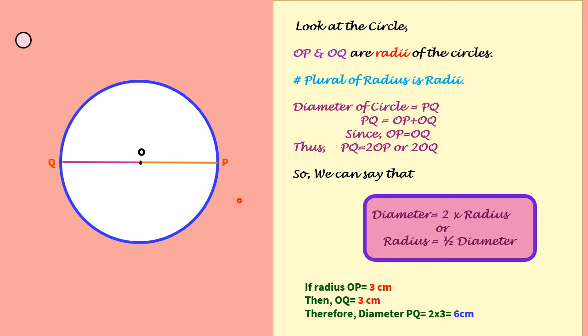Plural of radius is radii. Thus OP and OQ are radii of the circle. In previous class we learned that a line segment touching the circle at two points and passing through the center is called diameter. Thus PQ is diameter of circle. We can also see from the figure that PQ is equal to OP plus OQ.